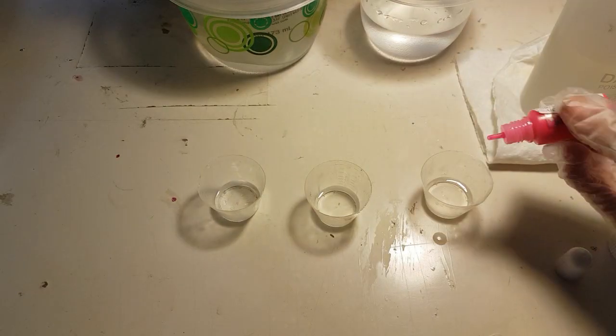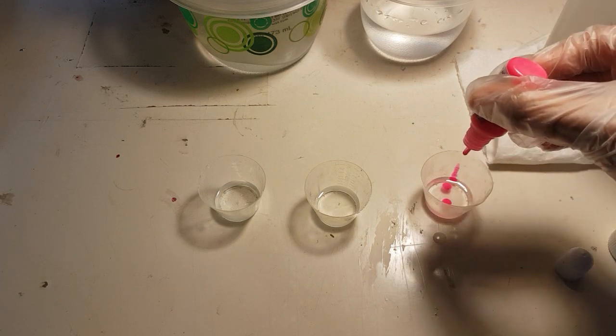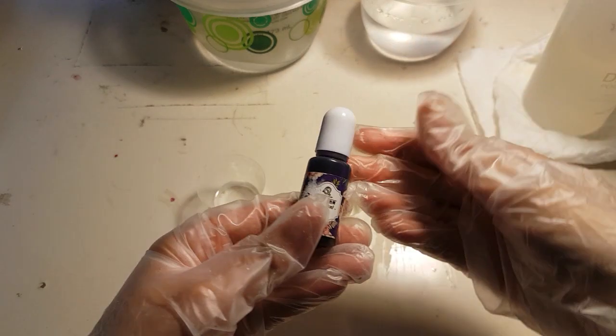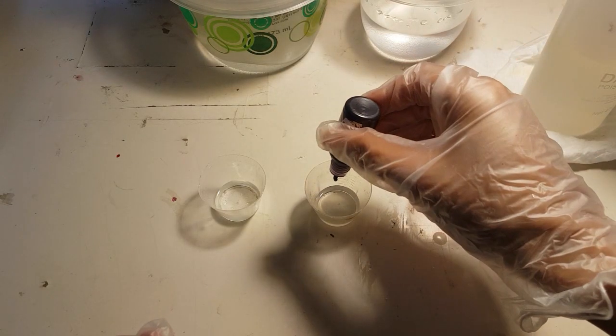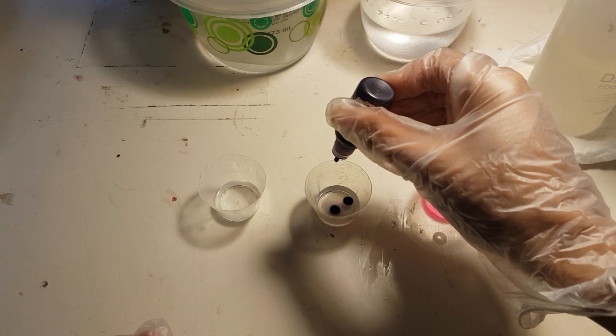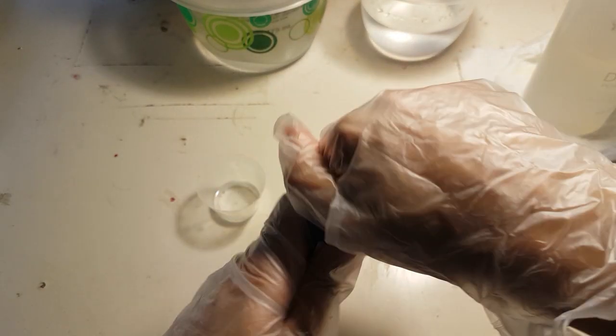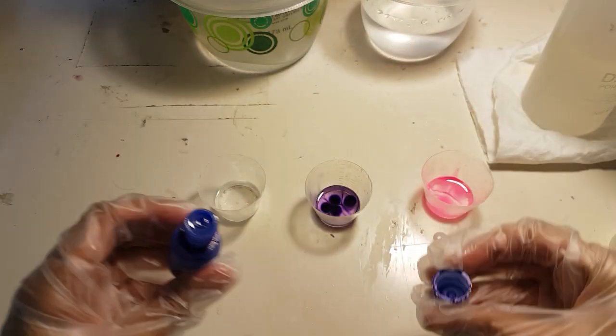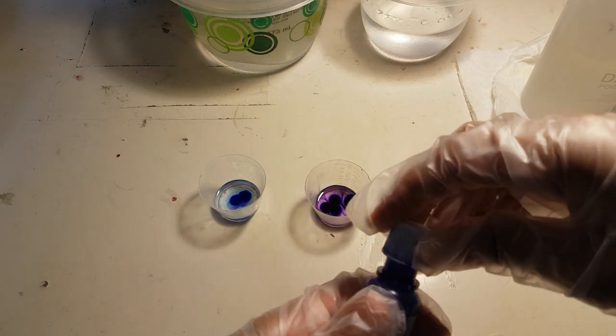Before adding the hardener, I first added pigment and glitter to each cup. This gives me time to get all the colors I want before the resin starts to turn to jelly. The dyes are alcohol-based and specifically for resin. Water-based dyes will cause the resin to not cure properly.